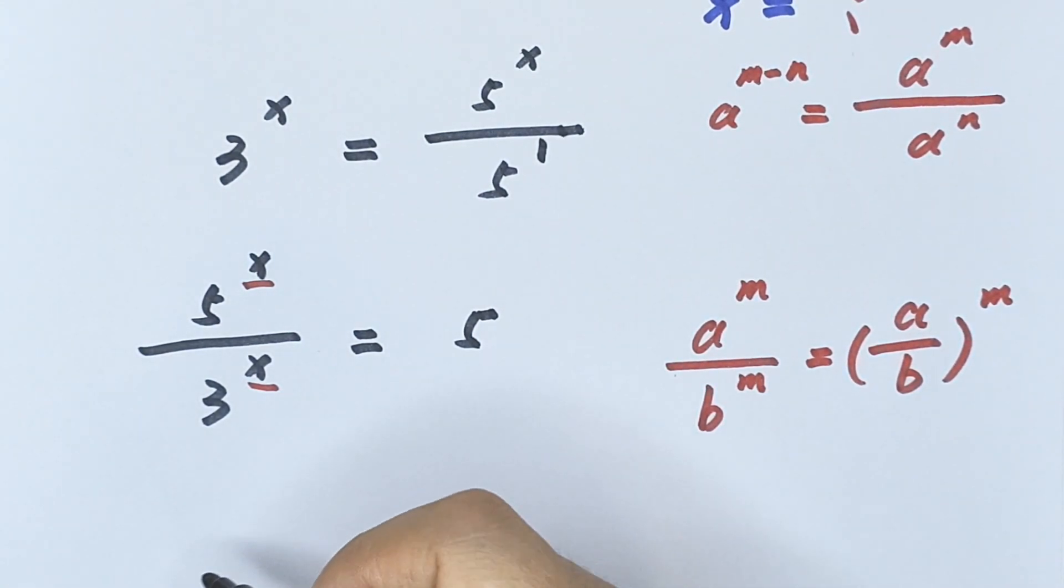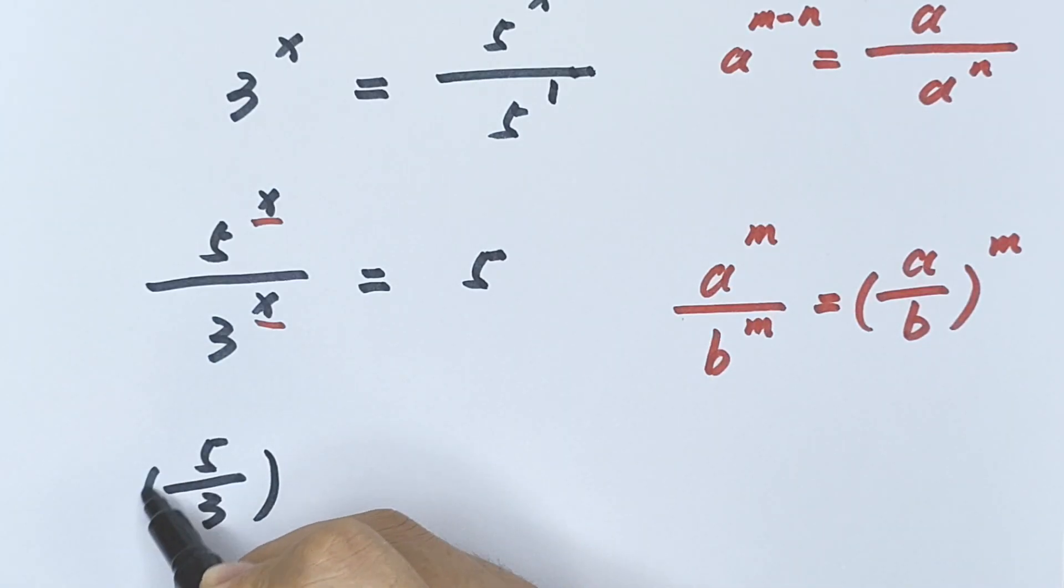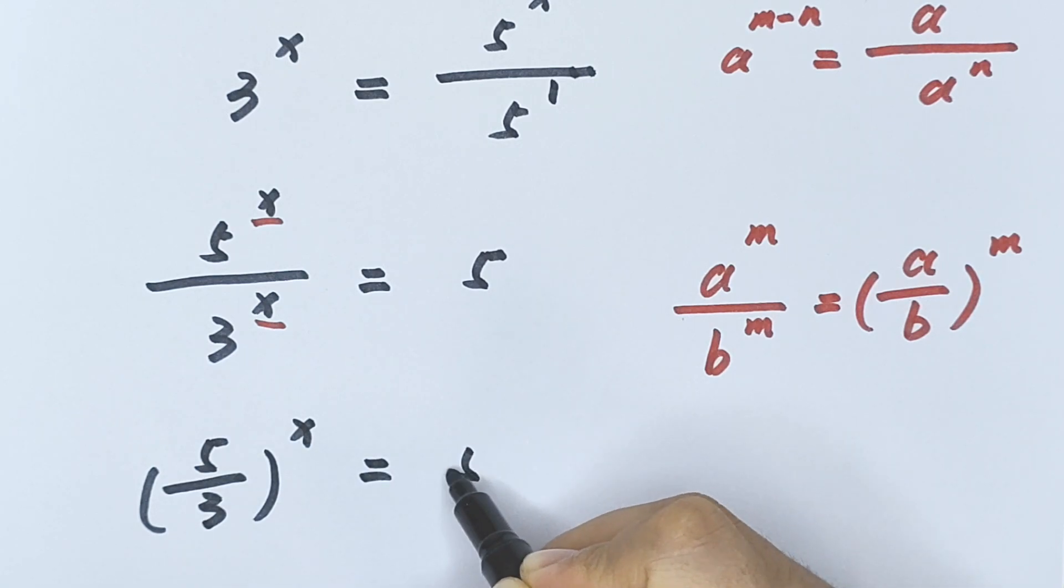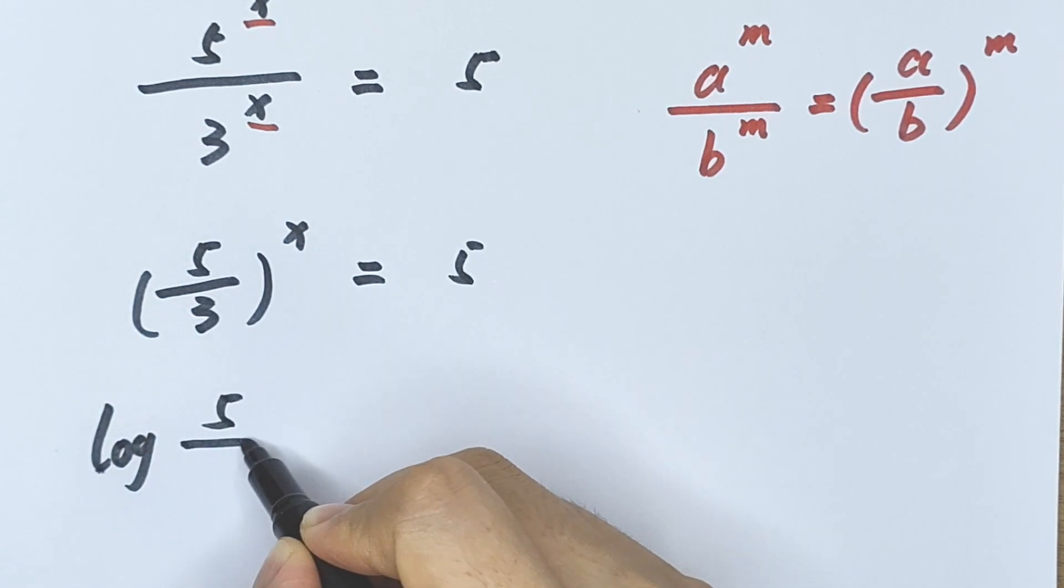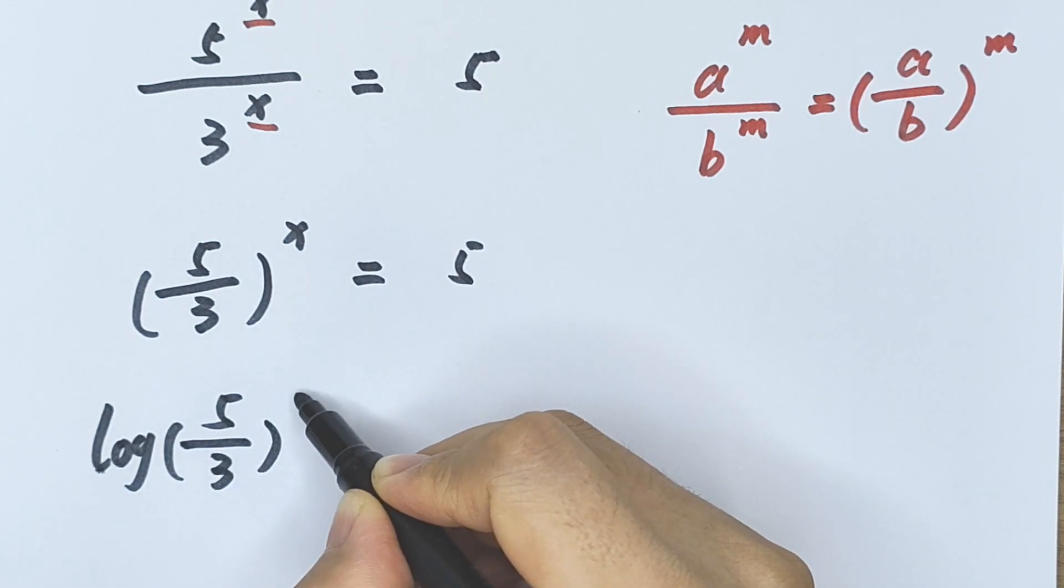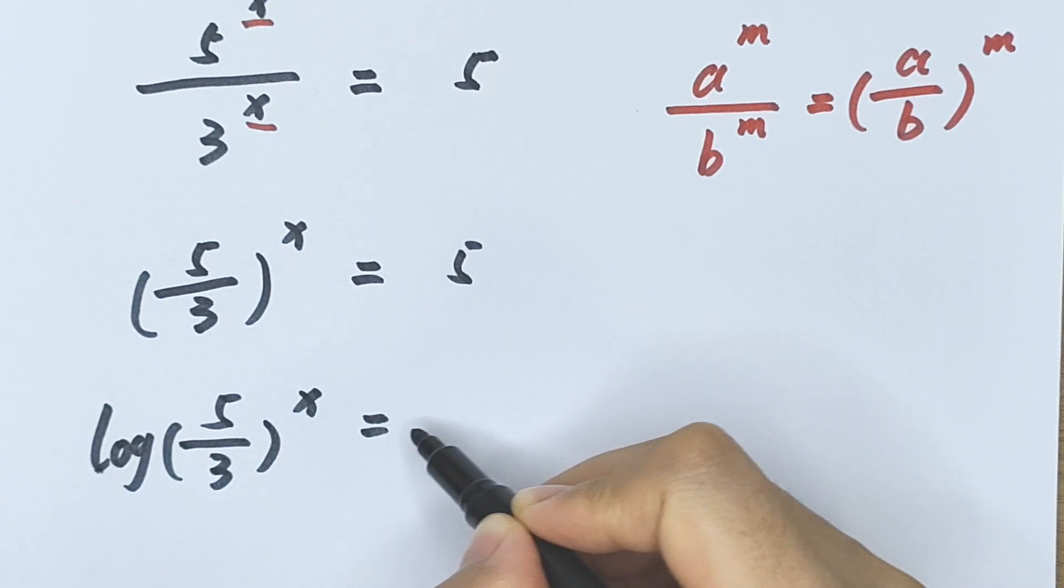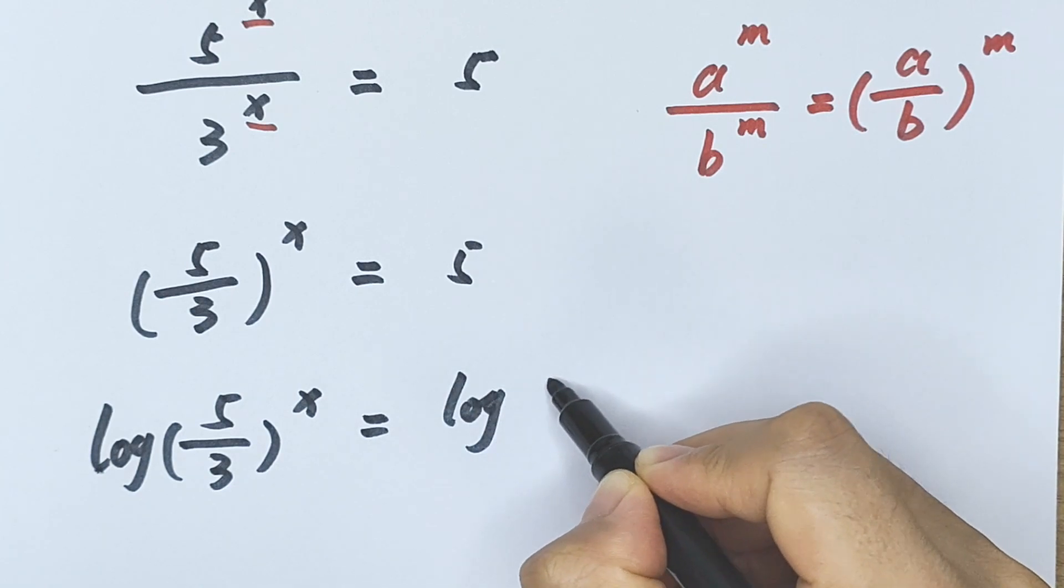So the left side is 5 over 3 in brackets to the power of x equals 5. Now we apply the logarithm to both sides.